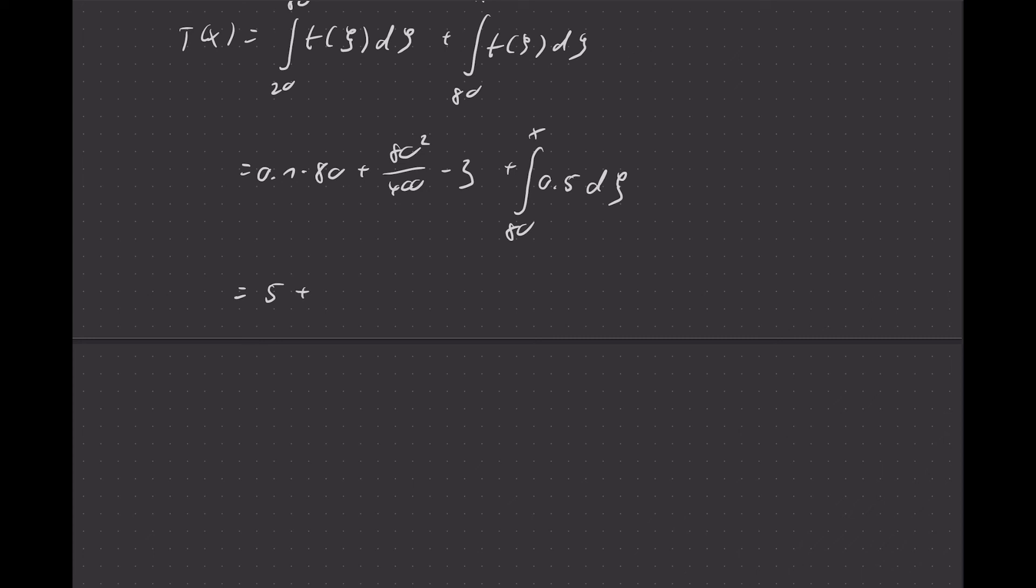Let's see, 10% of 80 is 8, minus 3 is 5. Then 80 squared, 8 squared is 64, so we have 6400 divided by 400. Plus, this integral here is 0.5x from 80 to x. 64 over 4 is 16, 16 plus 5 is 21. Then we get 0.5x minus 0.5 times 80, which is 40. So altogether we have 21 minus 40, that is minus 19, so 0.5x minus 19.